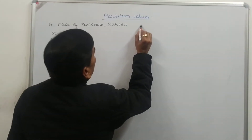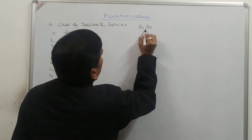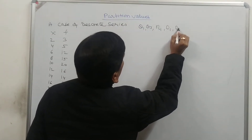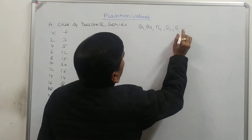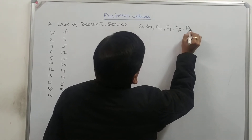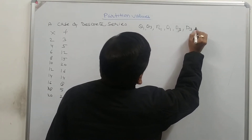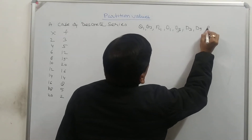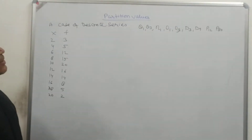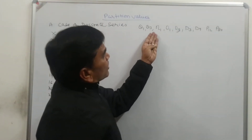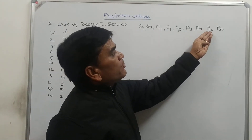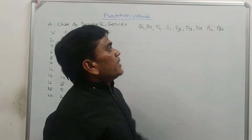Suppose we have to calculate the value of: first quartile Q1, third quartile Q3, quintile first, octile 1, octile 3, decile 3, decile 9, percentile 12, and percentile 80. We have to calculate Q1, Q3, quintile first, octile first, octile third, decile 3, decile 9, P12, and P80.